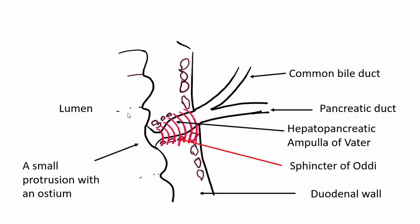After food enters the duodenum, the duodenal epithelial cells secrete a hormone called cholecystokinin. Cholecystokinin relaxes the sphincter of Oddi, thereby enabling bile to pass freely into the duodenal lumen. Parasympathetic stimulation also relaxes the sphincter of Oddi, whereas sympathetic stimulation contracts it. So the flow of bile is regulated by the hormone cholecystokinin.